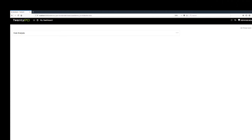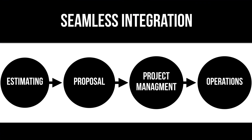One problem we typically hear from contractors is that they're using up to five different systems to manage their projects and businesses — from estimating to project management, accounting, human resources — plus a ton of spreadsheets to keep everything on track. Because 2020 is a full construction solution, you can easily move information from estimating to proposals to project management and into accounting and project costing without duplicating any data, in a nice easy-to-use workflow.